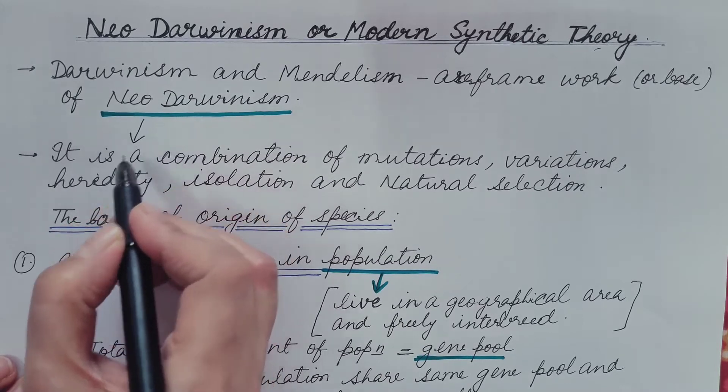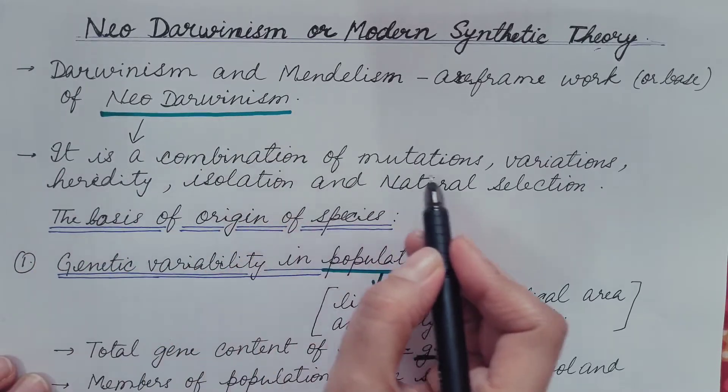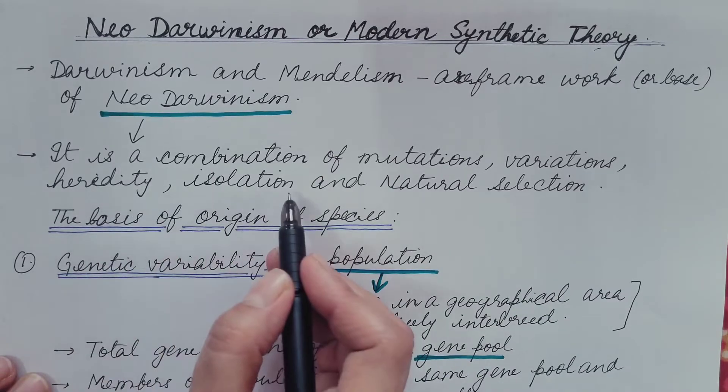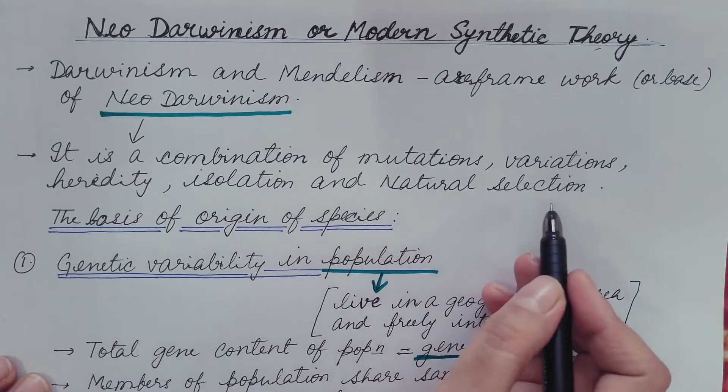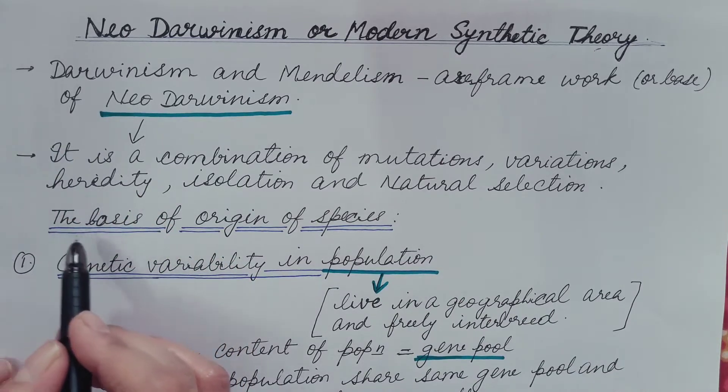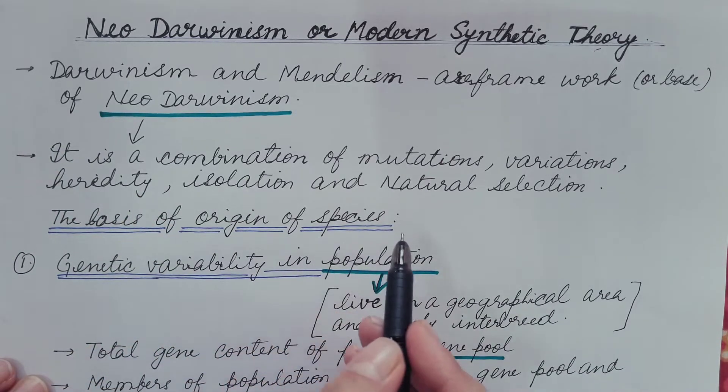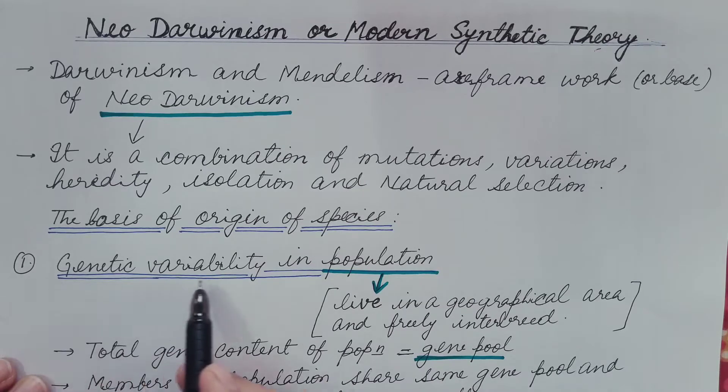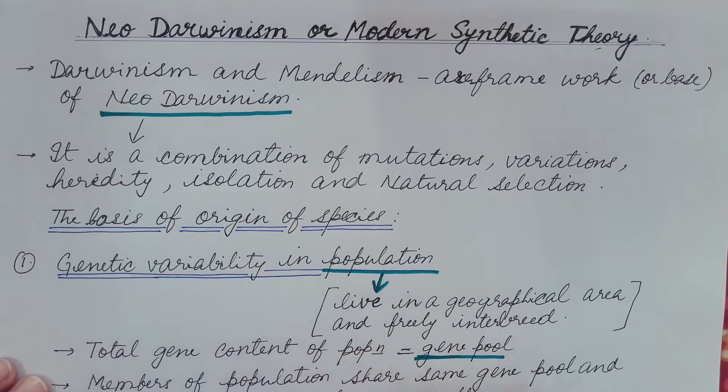This Neo-Darwinism is a combination of mutations, variations, heredity, isolation, and natural selection. According to this, there are certain basis of origin of species. We will discuss this one by one. First is genetic variability in population.